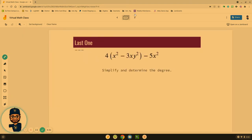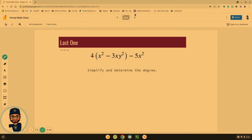One more final example. Let's see if we can't simplify this expression - simplify it and then determine the degree. To simplify, we have to distribute the four first: 4(x² - 5xy²) - 5x². So 4x² minus 12xy² minus 5x².